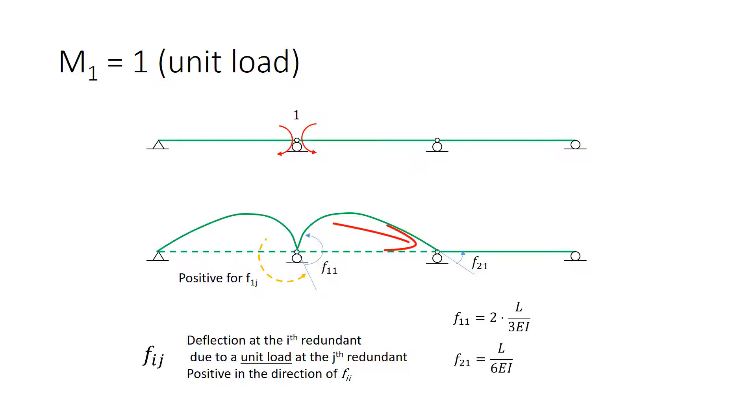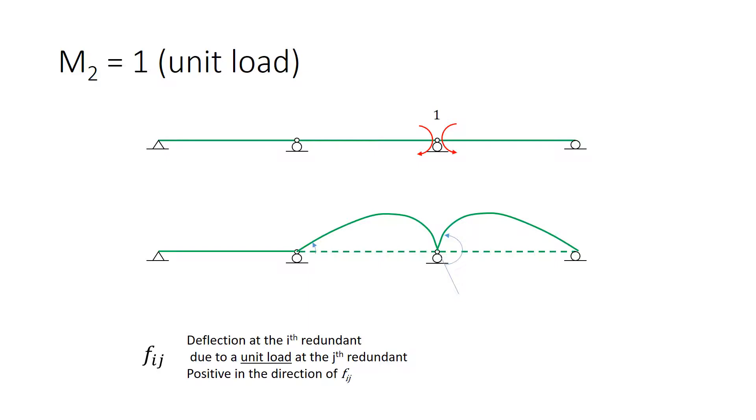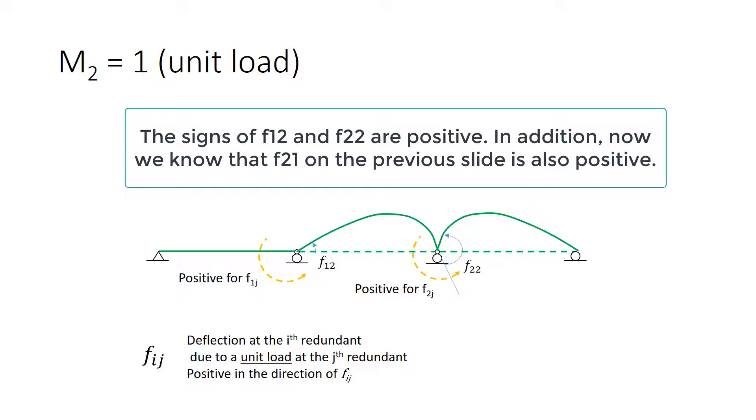Let's move now to M2 equals 1. For M2 equals 1, we're looking at the same primary structure, but now we're looking at the load at the other release that we made. This is the deformed shape. I've labeled the angles already. We recall our definition. We can label the deformations accordingly. On the right side, it's the deformation at the second redundant due to a force at the second redundant, hence it's F2-2. The other one is the deformation at the first redundant due to a unit load at the second redundant, so it's labeled F1-2. The positive sign convention for the F1s was already determined on the previous screen. The sign convention for the F2s can now be determined now that we know the direction of F2-2.